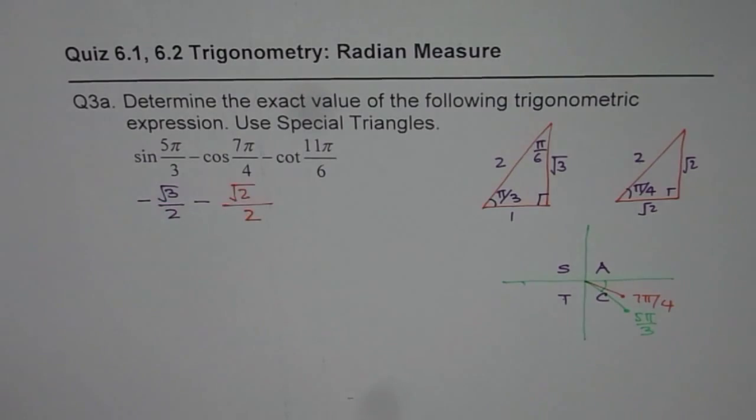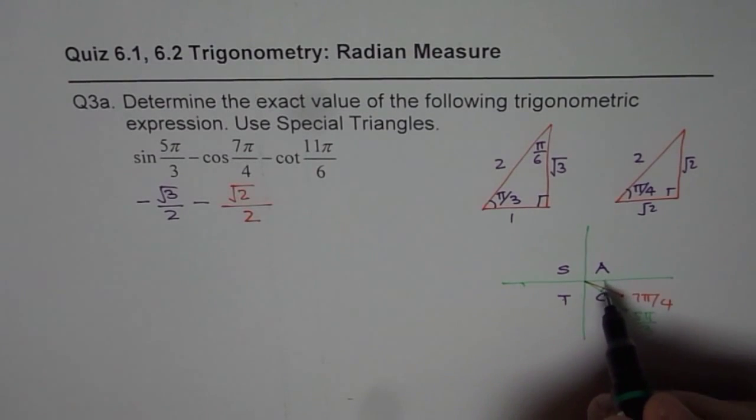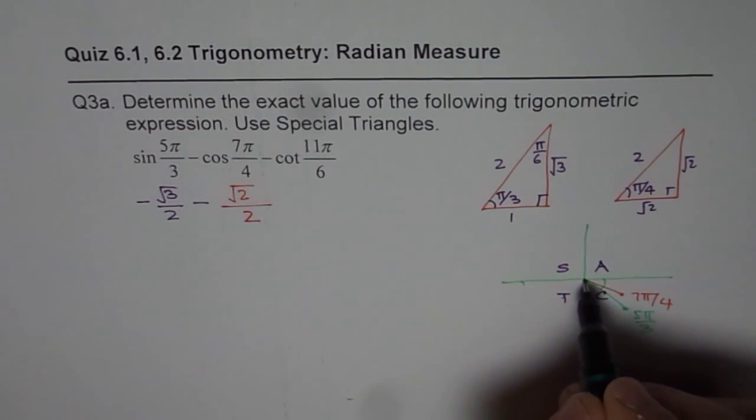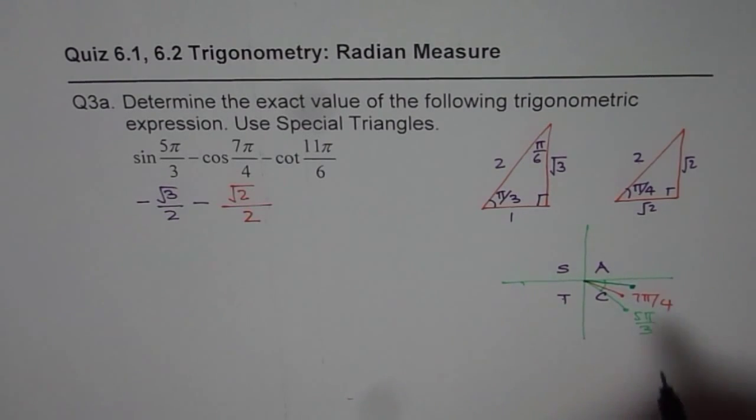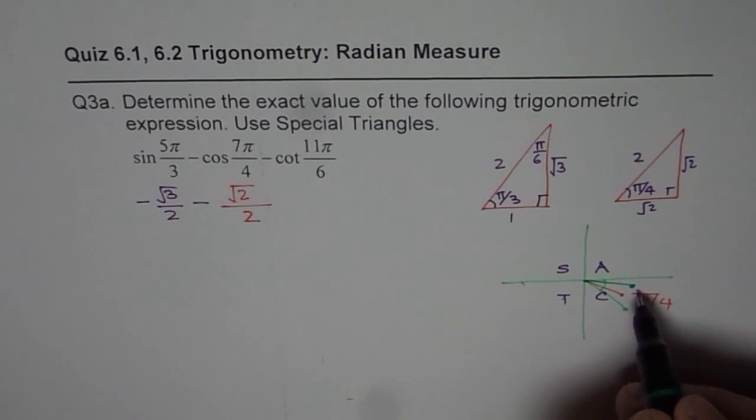Now, let us consider the next angle, which is cot 11π/6. 6 and 6, total becomes 12. We are on the 11th portion. So, let us say this is the point. So, we are again in quadrant 4.